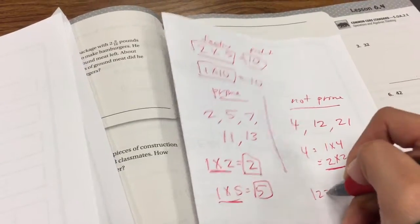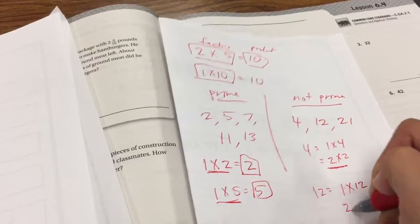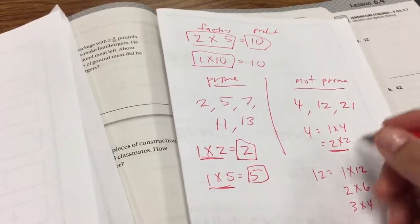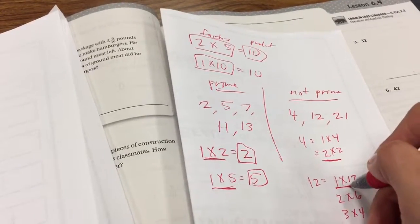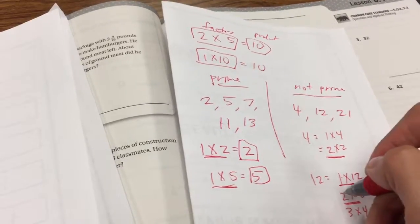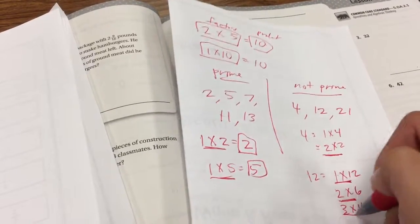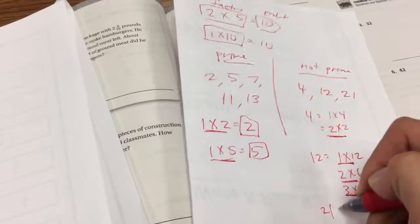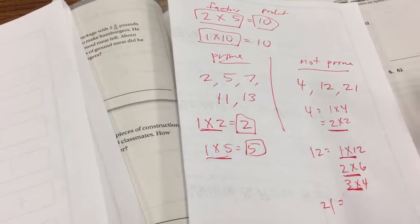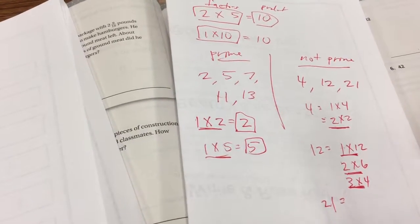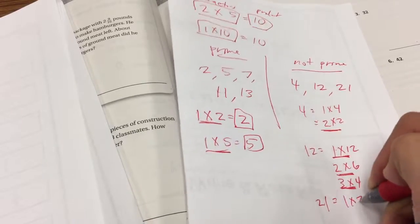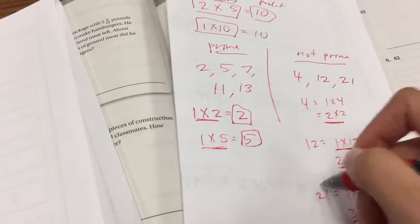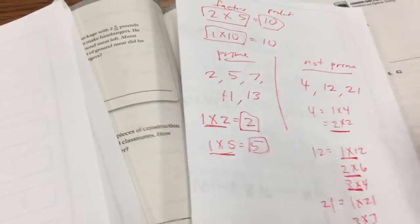For 12, we have quite a few. We not only have 1 times 12, but we have 2 times 6 will get us to 12. 3 times 4 will get us to 12. And so here, we not only have 1 and 12 as the factors, but 2 and 6 are factors that you can multiply to get 12. 3 and 4 are factors that you can multiply to get 12. Same with 21. Just because the number is odd does not mean it's not prime. To get to 21, not only can we do 1 times 21, but we could do 3 times 7.